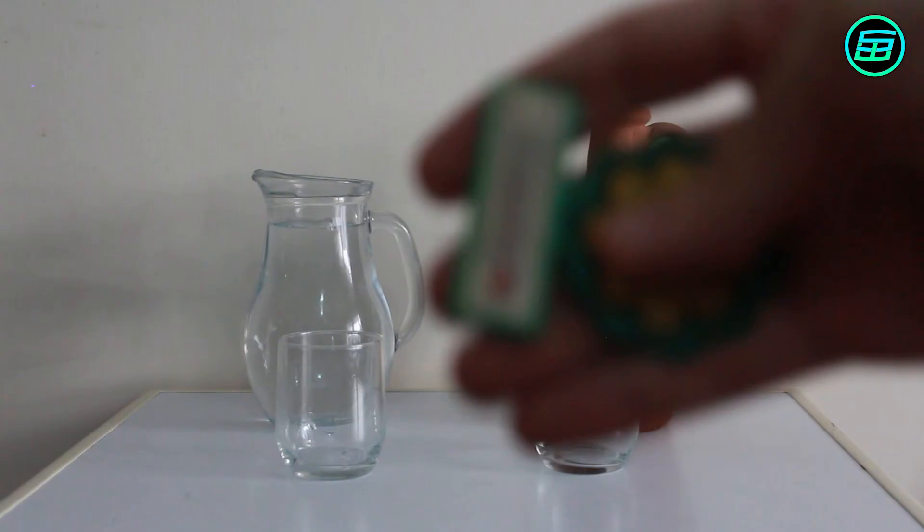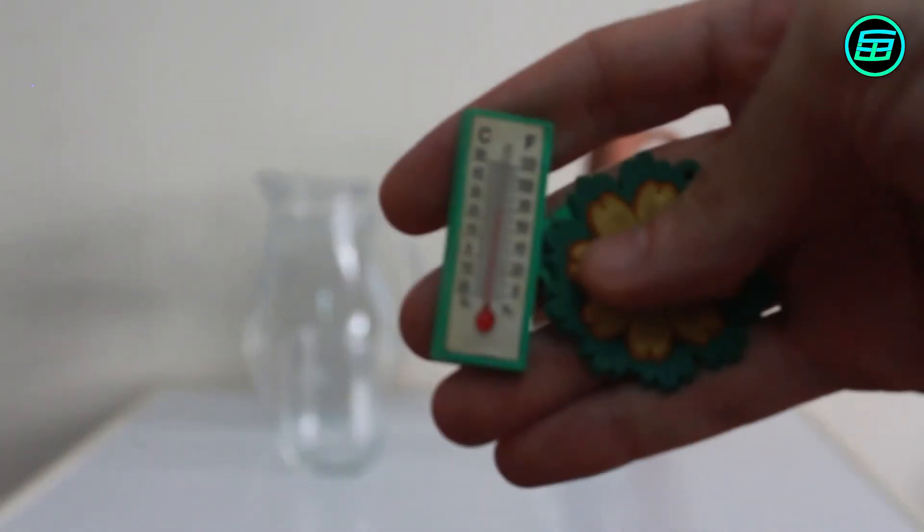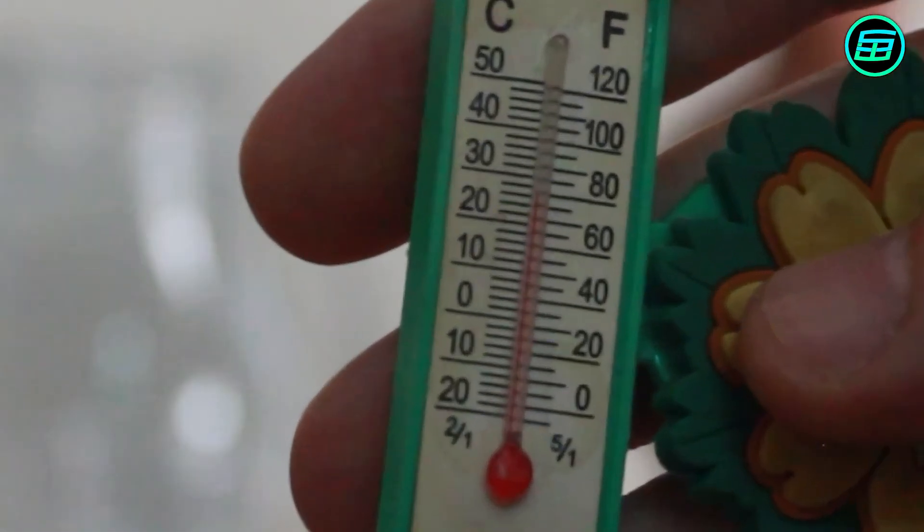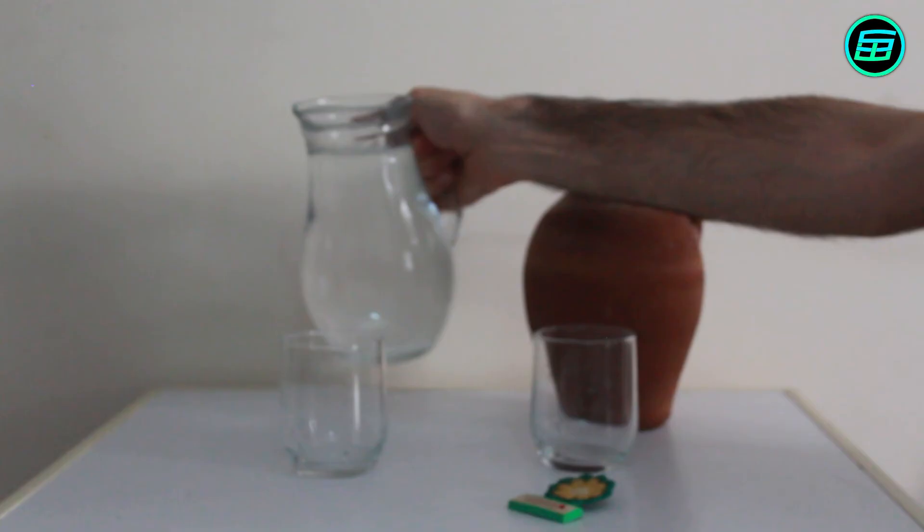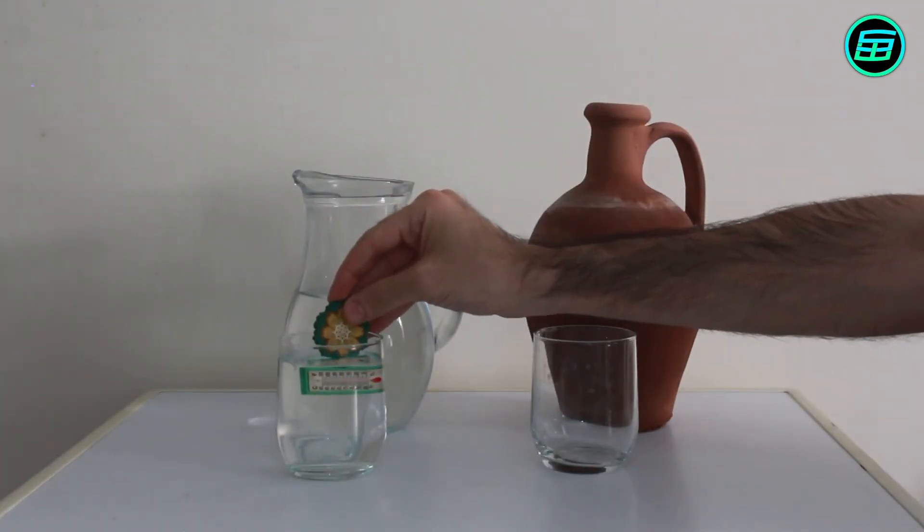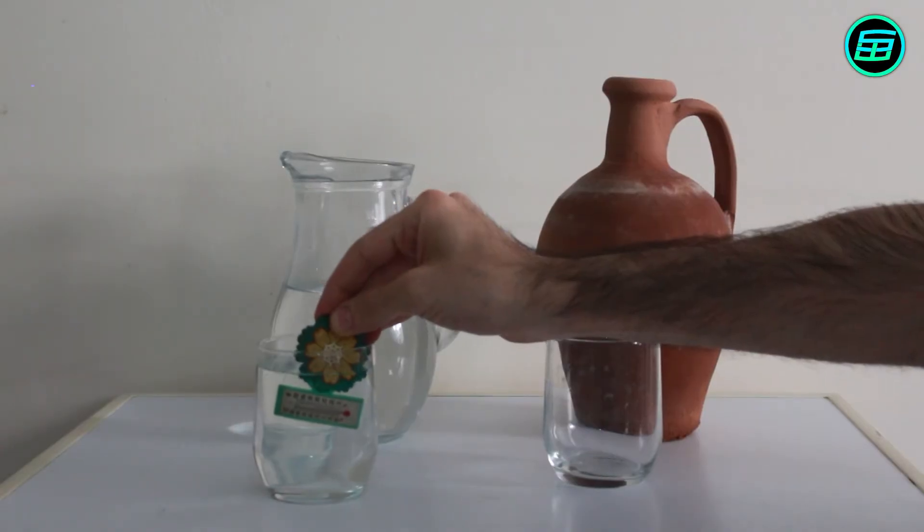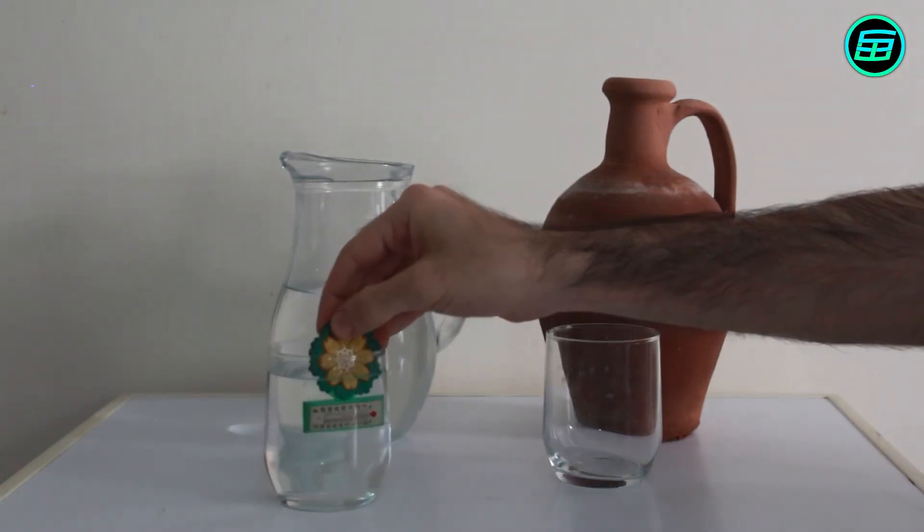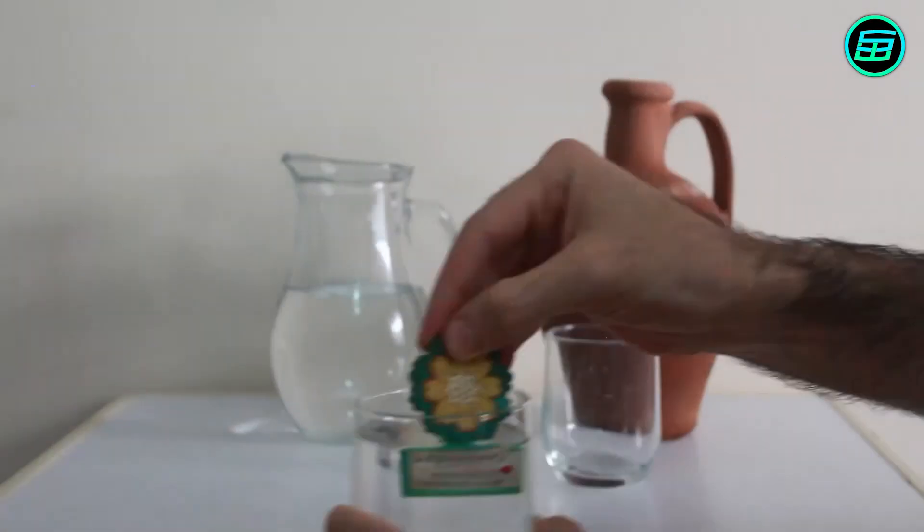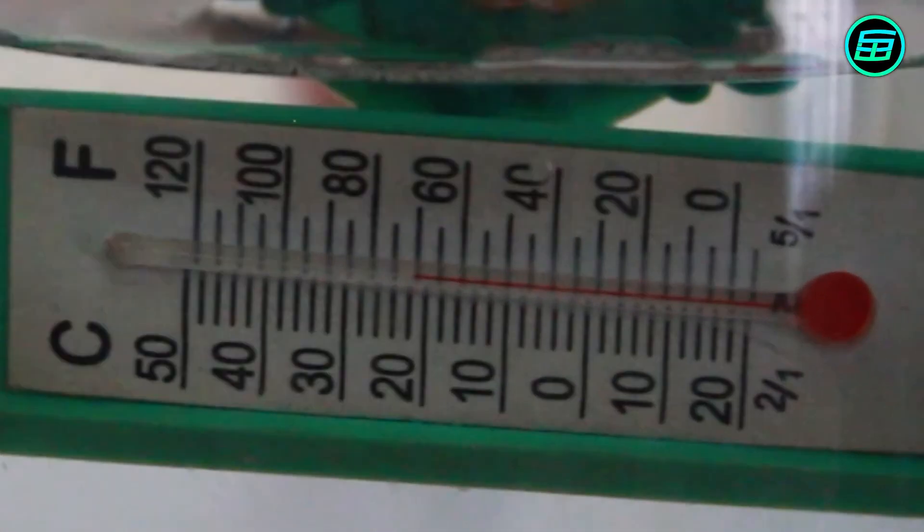Let's first measure the temperature of the environment. It's summer and the temperature is about 27 Celsius or 80 Fahrenheit. Now we'll measure the temperature of water in the water jug. And we see that it's 22 Celsius or 72 Fahrenheit.